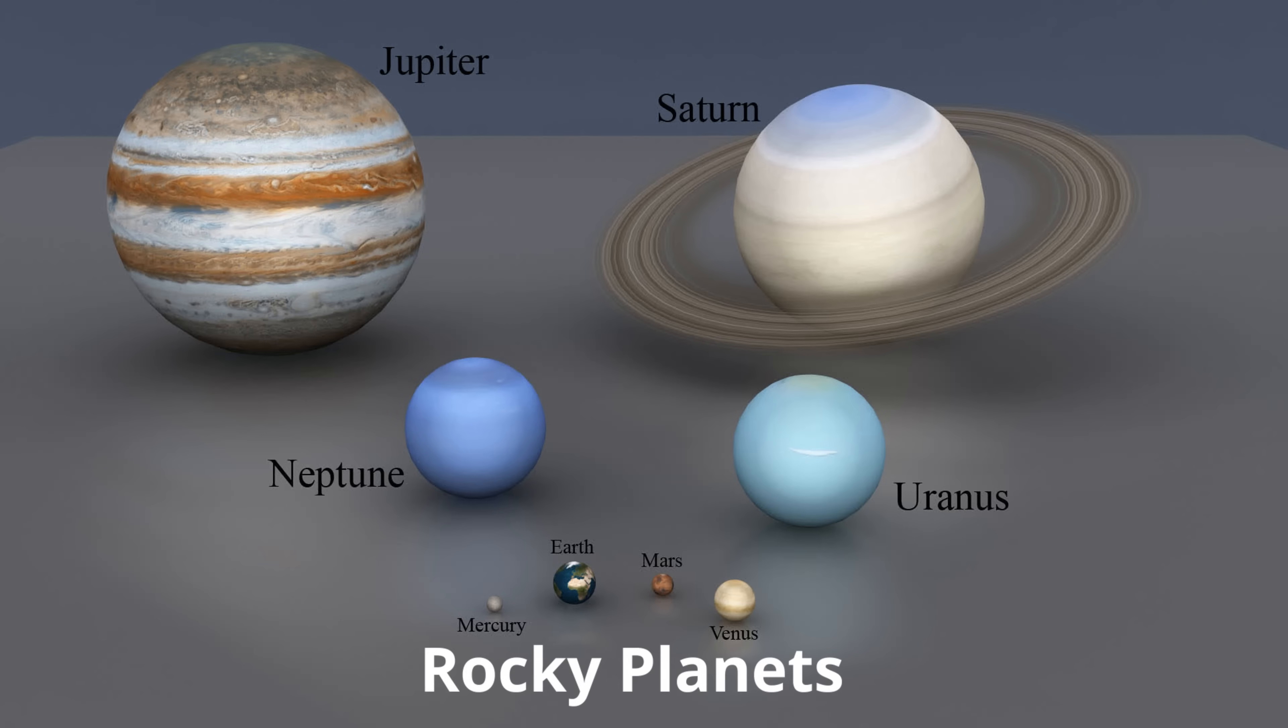The four planets farthest away from the sun - Jupiter, Saturn, Uranus, and Neptune - are called gas giants. Why? Because they're mostly made of gas, so you couldn't walk on their surface if you visited them because there's no solid surface or terrain to walk on. The gas giants are also huge. Jupiter is so huge that more than 1,300 Earths could fit inside of it.